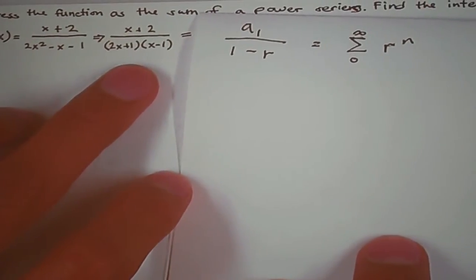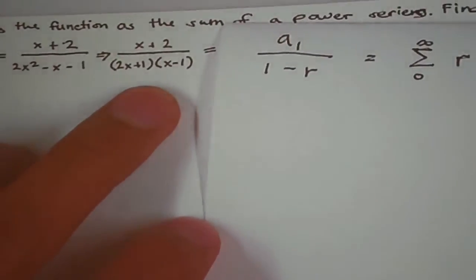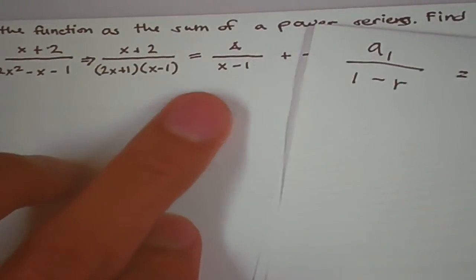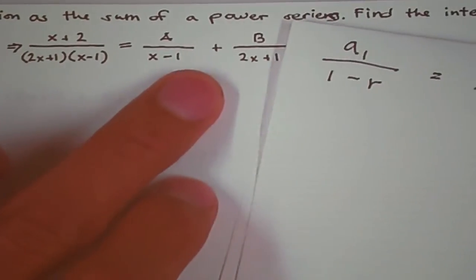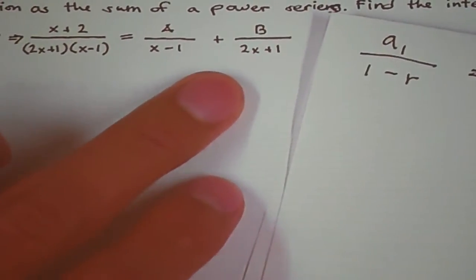Now in order to solve this we need to use the partial fraction which will become A over x minus 1 plus B over 2x plus 1.